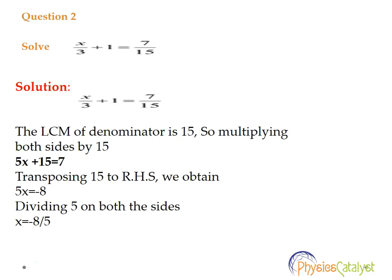In these types of questions where numerator and denominators are there, we need to get the LCM of the denominator. So here the denominators are 3 and 15, so LCM would be 15. So multiplying both sides by 15 we get 5x plus 15 equals 7.